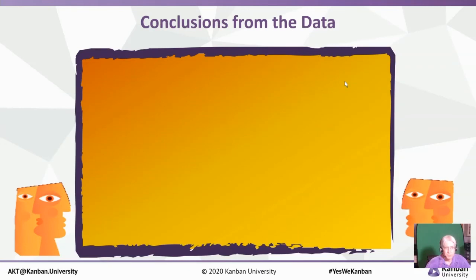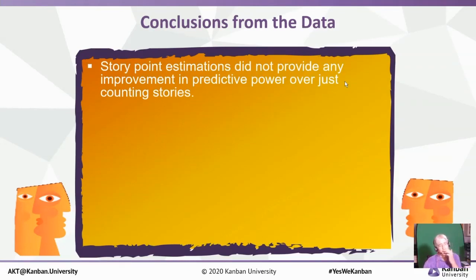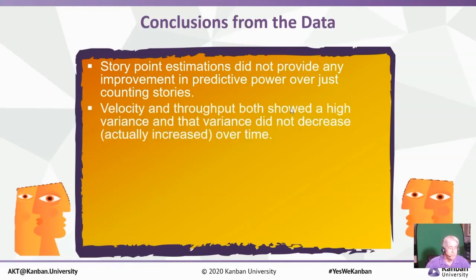Some other conclusions from the data: first, story point estimations didn't provide us any improvement in predictive power over just counting stories — a pretty important insight. Velocity and throughput both showed high variance, and that variance did not decrease over time — it actually increased. The things we frequently count on as hopeful just turn out not to be the case.